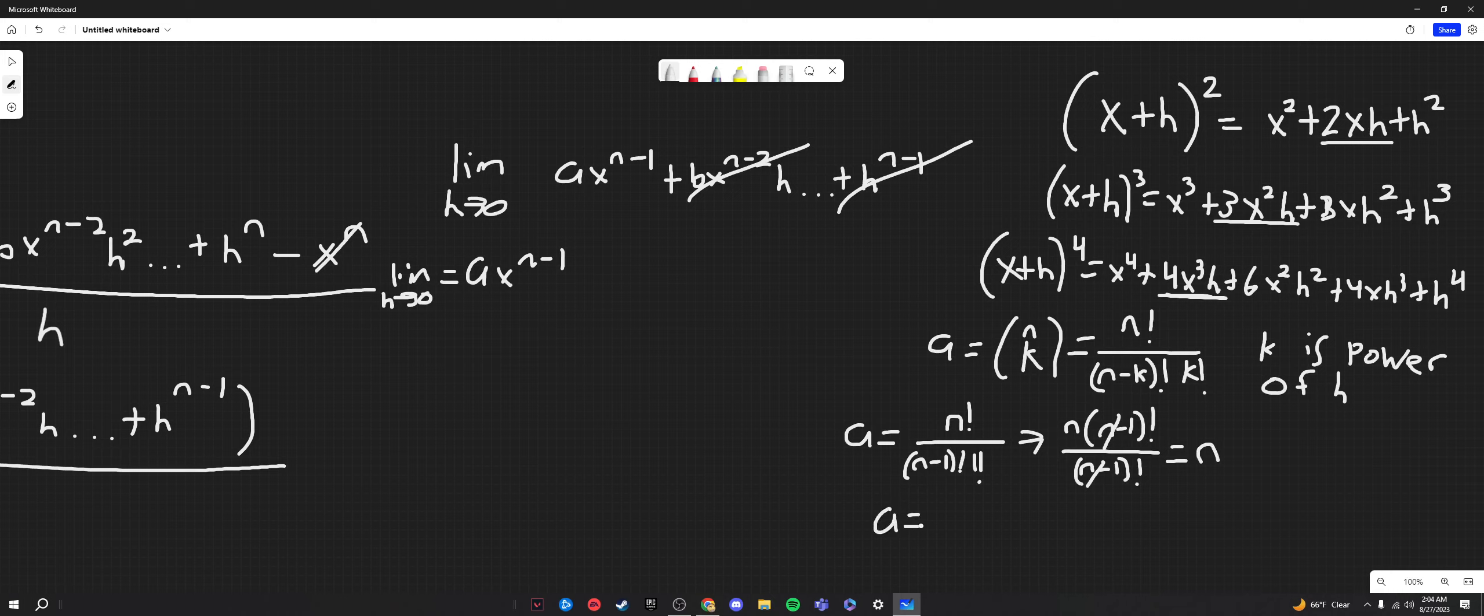So, this last term here, we can replace that. So, we would have the limit as h goes to 0, and of course, all these terms have disappeared. So, we will just have n times x to the n minus 1, which is exactly the power rule. Therefore, our proof is complete.